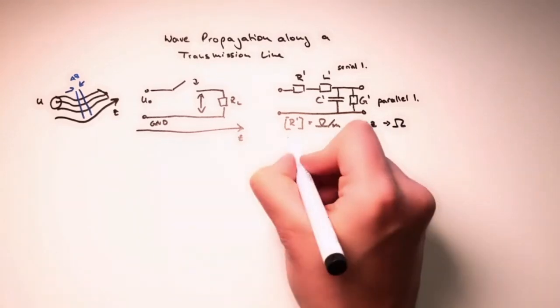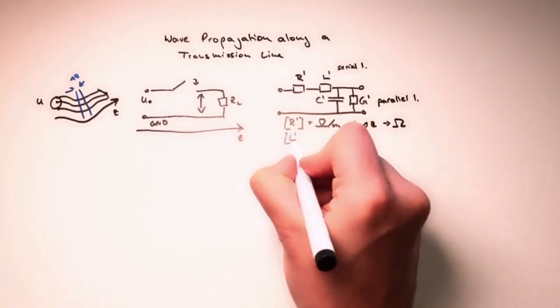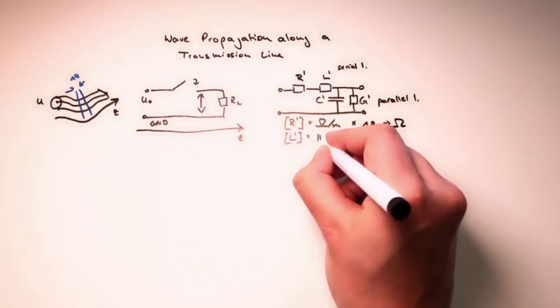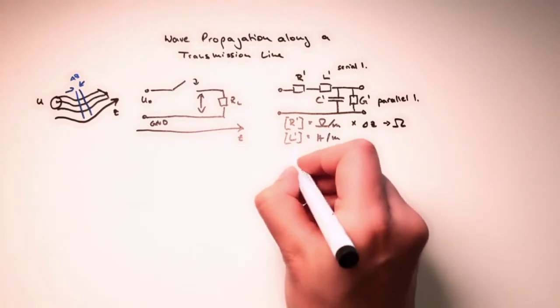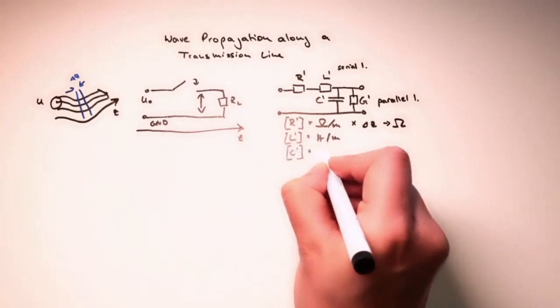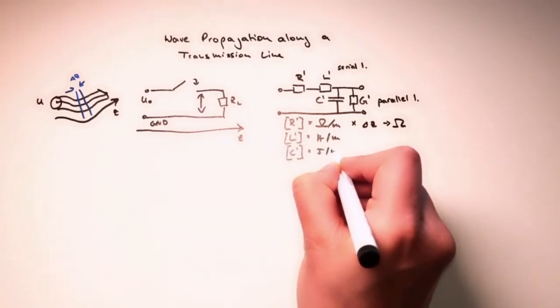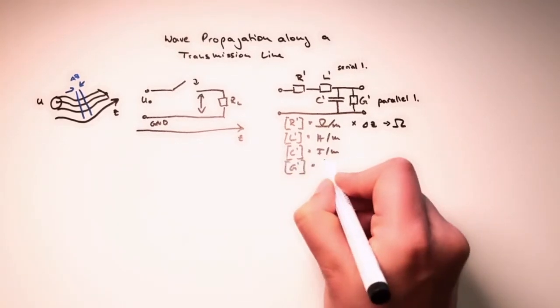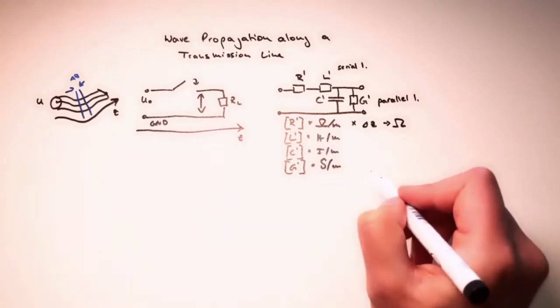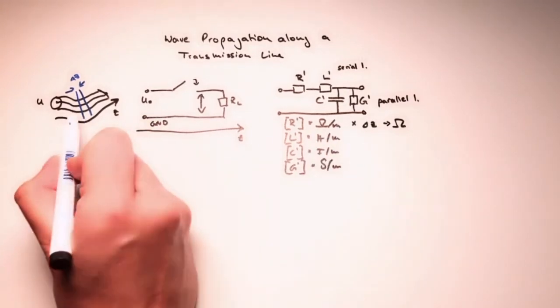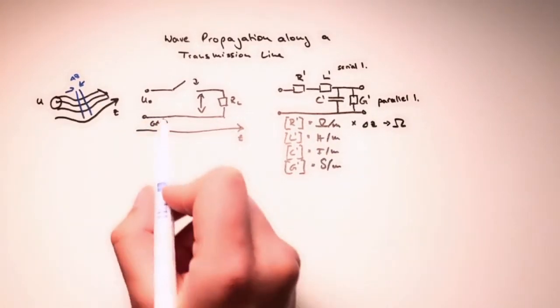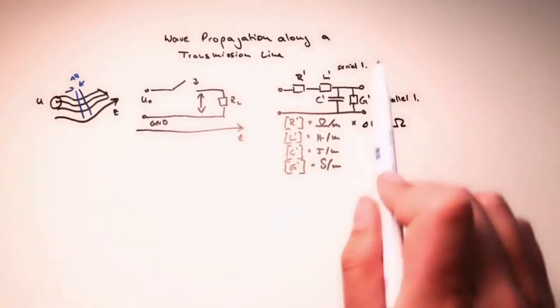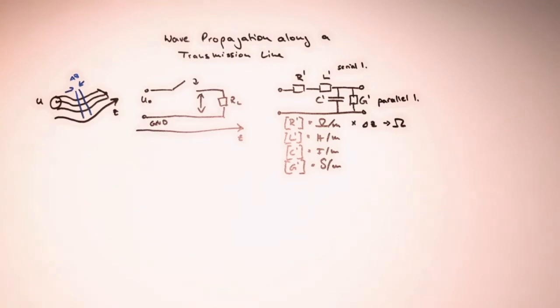The same applies to everything else. For the inductance, we would have Henry per meter. And for capacitance, we would get something that is Farad per meter. And for the conductance, something that is Siemens per meter. And all of these would have to multiply by delta z, the width we have here to get a description of how this portion is behaving. And in the end, we can piece all of that together to get a solution.